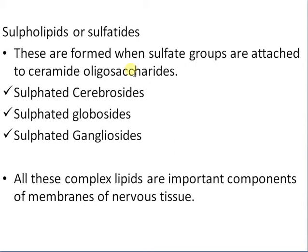Sulfolipids or sulfonides are formed when sulfate groups are attached to the ceramide oligosaccharides. These include sulfated cerebrosides, sulfated globosides, and sulfated gangliosides. All these complex lipids are important components of the membranes of nervous tissues.